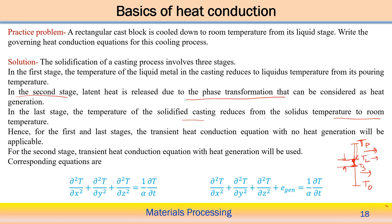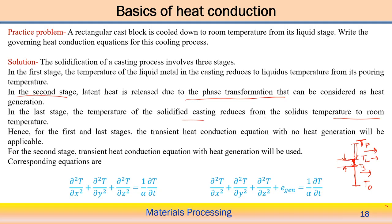So there is a peak temperature to the liquidus temperature, then the change of phase between liquidus and solidus temperature, after that the release of specific heat from solidus temperature to ambient temperature. This is the typical pattern of temperature changes and heat transfer in this practical problem. For the first and last stages, the transient heat conduction equation with no heat generation is applicable, because there is only a change in temperature without any heat generation within the system. For both these stages, there is no heat generation term, so we can use this equation.